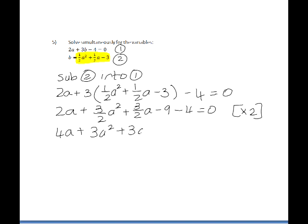3a squared plus 3a minus 9 minus 4 is minus 13, and minus 13 times 2 is negative 26, is equal to 0. And if we simplify and arrange into standard form, we get 3a squared plus 7a minus 26 is equal to 0.